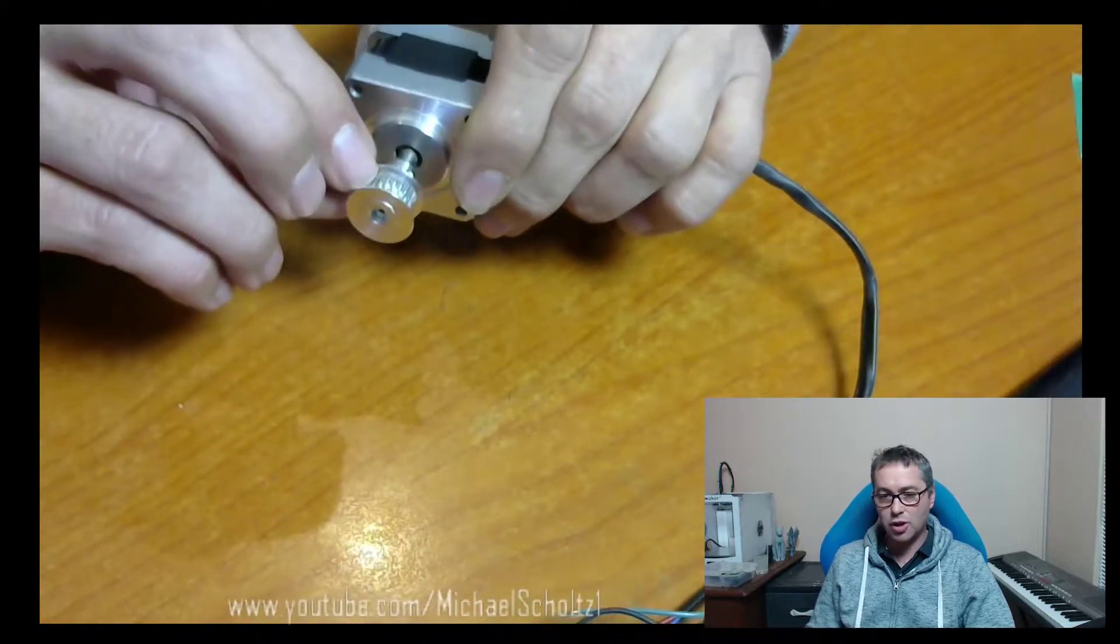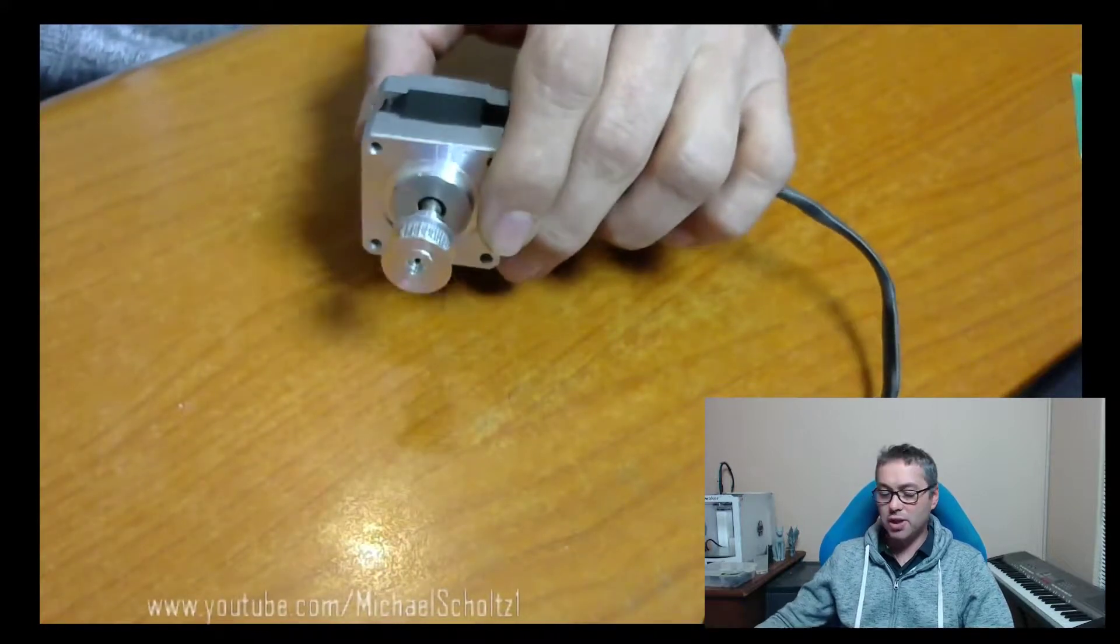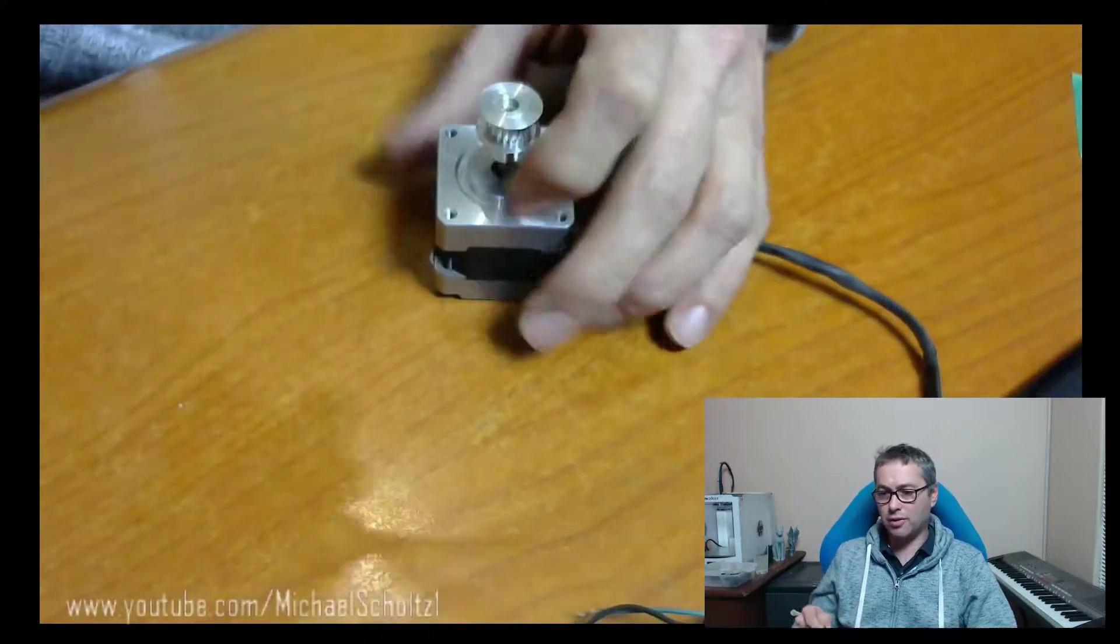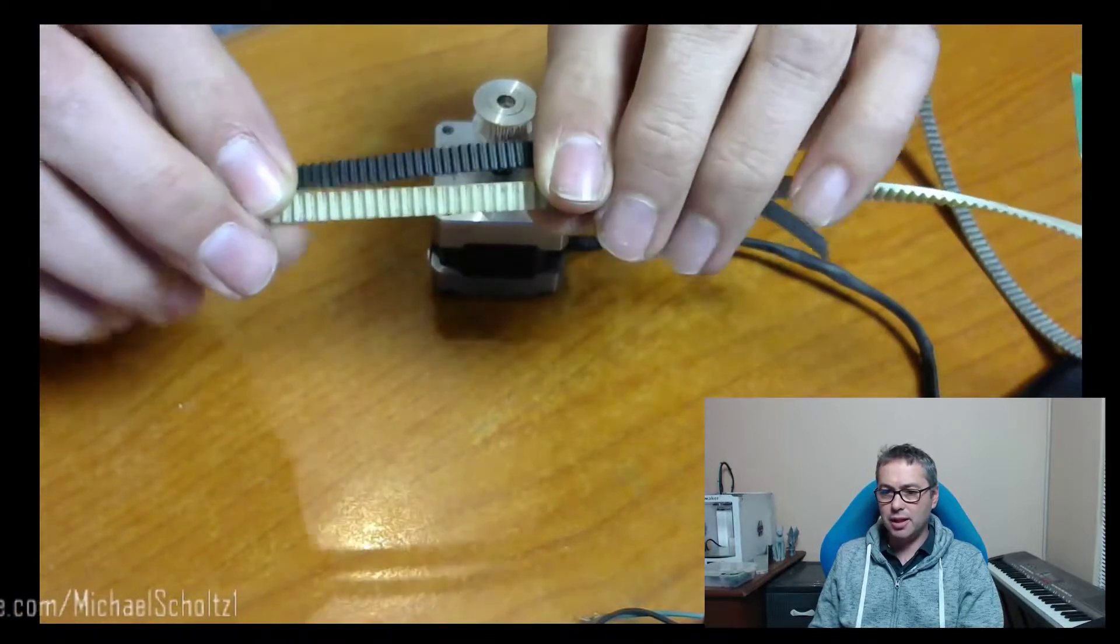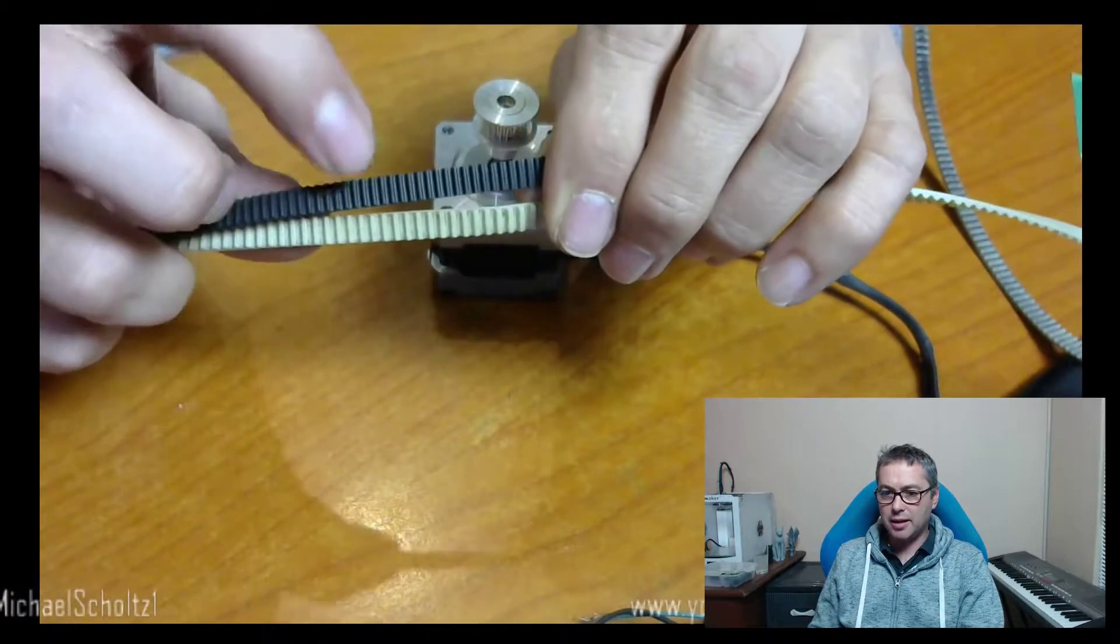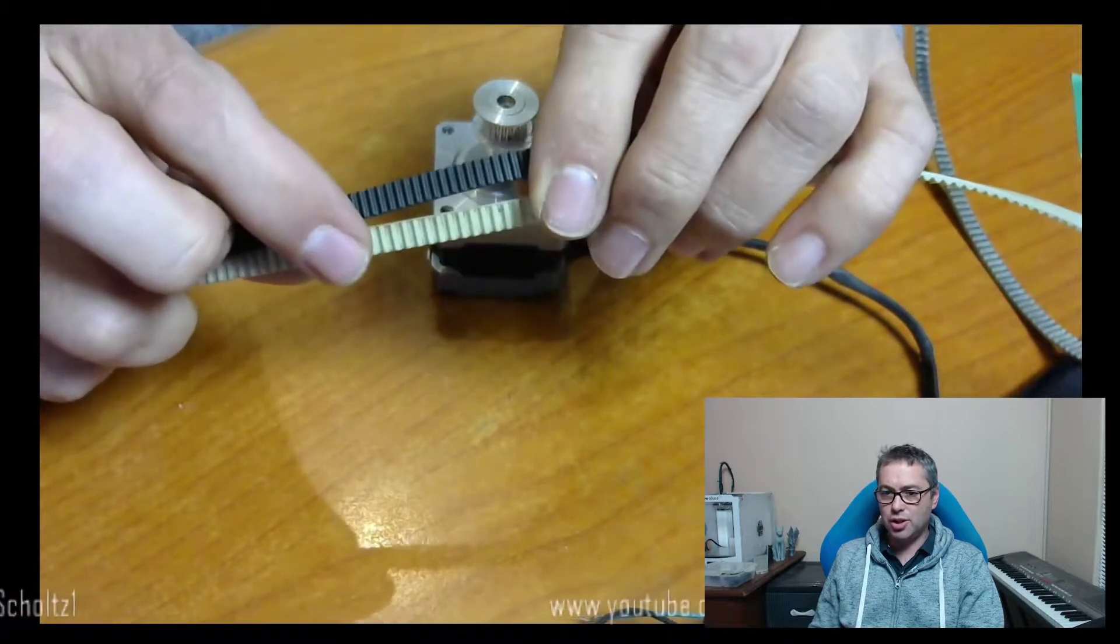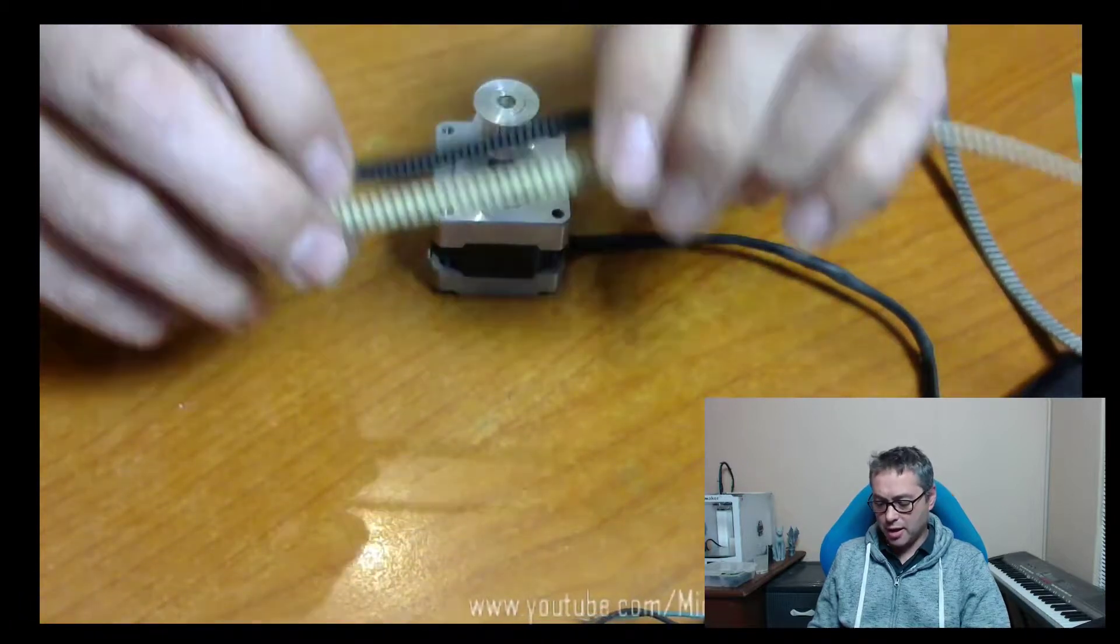It can also be GT 2.5. What I've got over here are two different belts. You can see this is GT2, and that's GT 2.5. The incorrect belt will slide over the teeth.